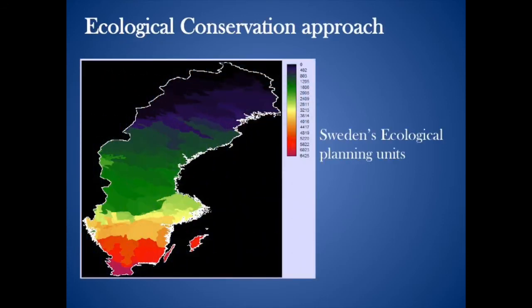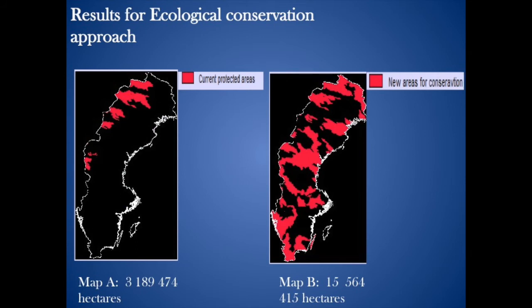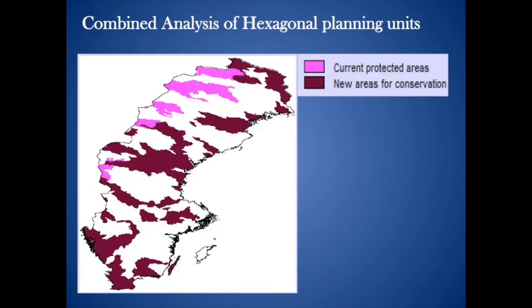Results. For the ecological conservation approach, ecological planning units were used. The results produced by Marksen for the ecological planning units illustrate map A being currently protected areas of Sweden and map B being new areas for conservation. The total area that the species are currently protected in is 3,189,474 hectares, whereas the new areas for conservation that Marksen generated covers an additional 15,564,415 hectares, as you can see more clearly in map C.